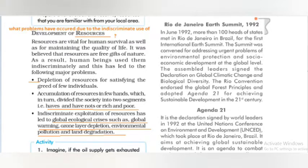So, indiscriminate use of resources without any planning leads to these problems: resources are depleted, there are social divisions in society between rich and poor, and there are ecological problems such as global warming, ozone layer depletion, environmental pollution, and land degradation.